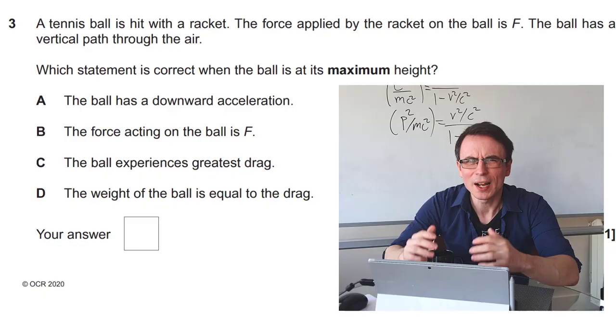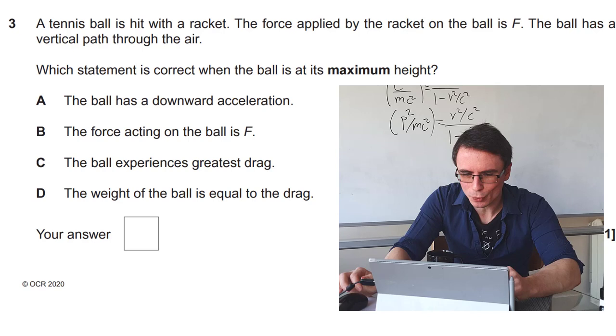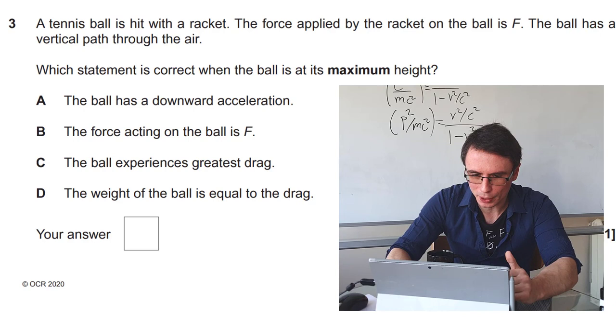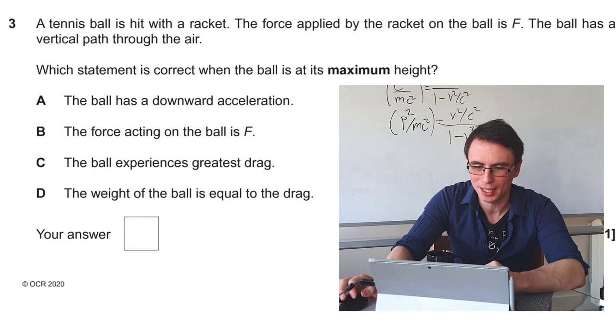Next one. A tennis ball is hit with a racket. The force applied by the racket on the ball is F. The ball has a vertical path through the air. Which statement is correct when the ball is at its maximum height? Let's copy that into ChatGPT.